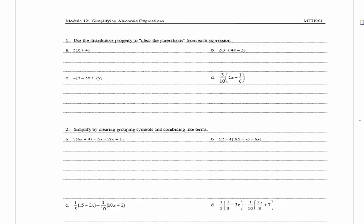In A we have 5 times (x plus 4). Using the distributive property, we multiply the 5 times each term inside the parentheses. So this is going to be equal to 5x plus 5 times 4, which simplifies to 5x plus 20.